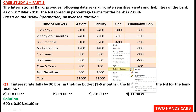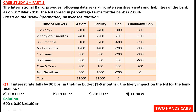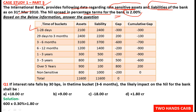Hi friends, today we are going to make Part 5 of our case study series. The first case study today is about International Bank, which has provided data regarding rate sensitive assets and liabilities. The nil spread in percentages is 2%. This data is given as on 31st March 2010, and the assets and liabilities table we already understood in Part 4.